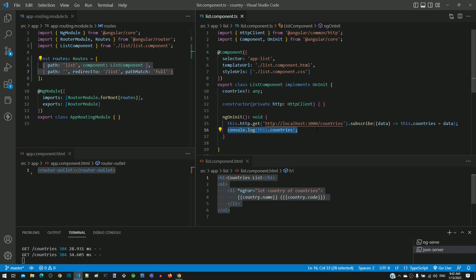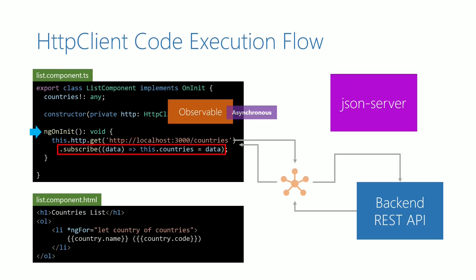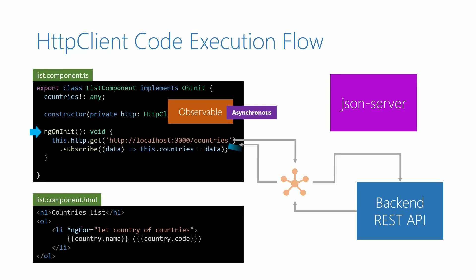This demonstration helps you understand that the code execution flow is not halted because of the backend call. The usage of the observable object and subscribe function helps to create this asynchronous behavior. After execution of the first line in the ngOnInit function, a separate line of execution is initiated by the browser to get the response data from the backend, and another separate line of execution continues the normal execution flow of the Angular application.